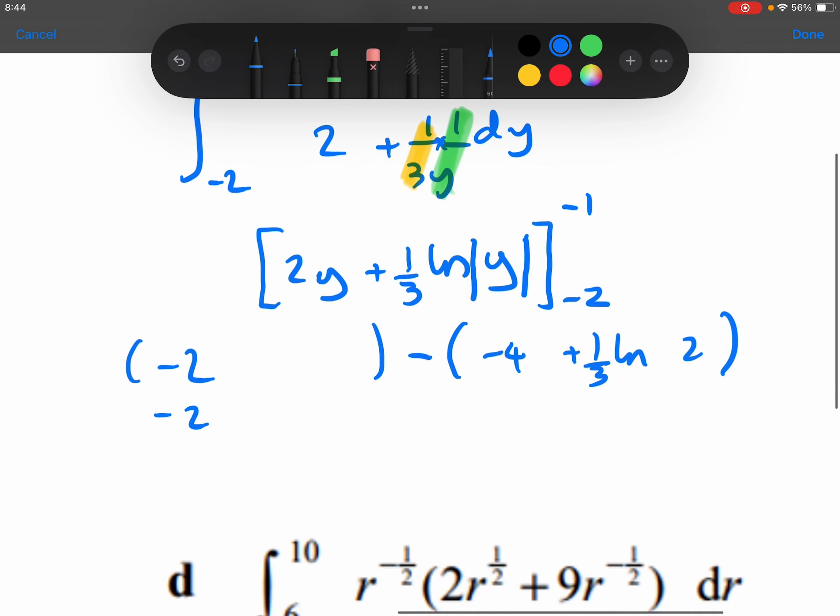Tidying this up then. So we've got the minus 2. The minus minus 4, so a plus 4 minus the 1 third ln 2. And the minus 2 and the plus 4 will give 2. And I think that's probably as simple as we can leave that answer.